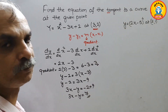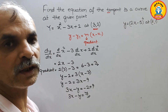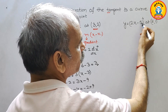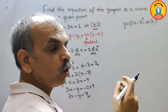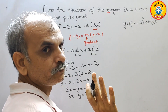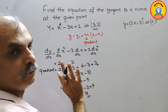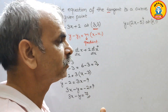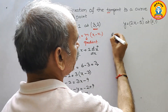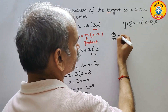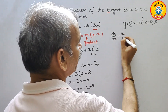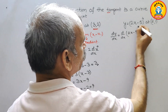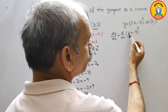Now comes the second one. Here we also have to do the same thing. They have given y equals (2x minus 5) to the power of 4, at the point (2, 1). The formula is the same. So first we will go for differentiation, then we will find out the gradient. So it will be dy by dx equals d by dx of (2x minus 5) to the power of 4.